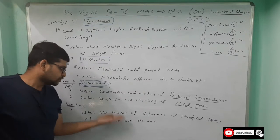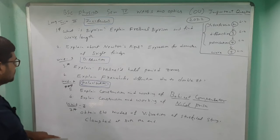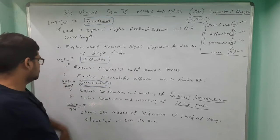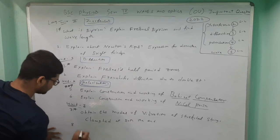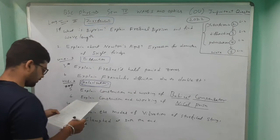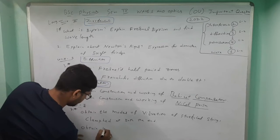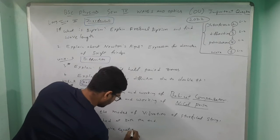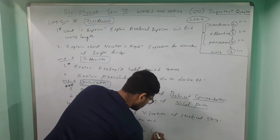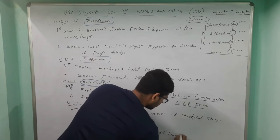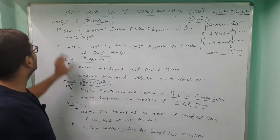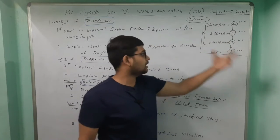First go for the modes of vibration question — it is important. For those who just want to pass, these starred questions are the priority. The eighth question: obtain the wave equation for longitudinal vibrations. So the order is: unit two, then three, then four, then one — these are the long answer questions.